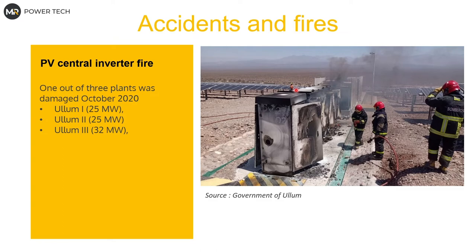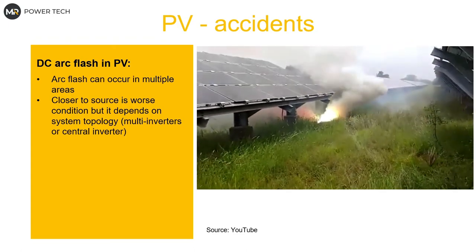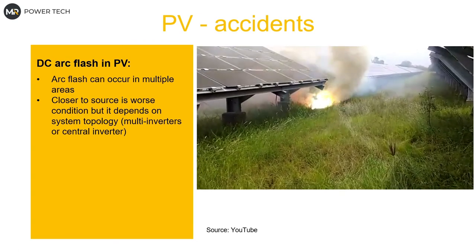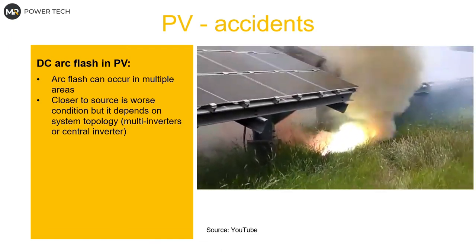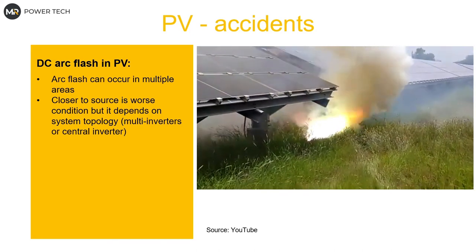There have been fires from this. There was a fire in Argentina at one of the central inverter plants — the inverter burned and there was little the firefighters could do. If you look at YouTube recordings of PV string cable or combiner box fires, the only thing you can do is cut the cable, which is not a very safe action unless you know exactly what you are doing.